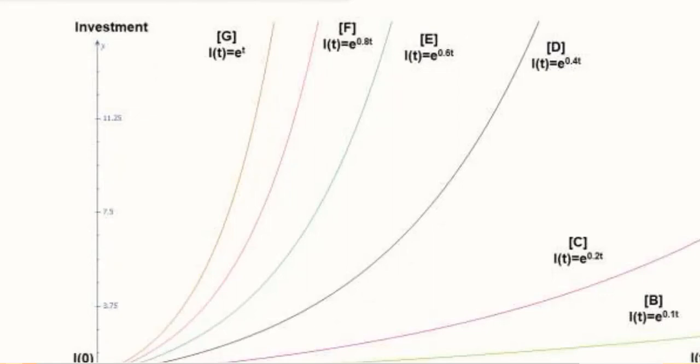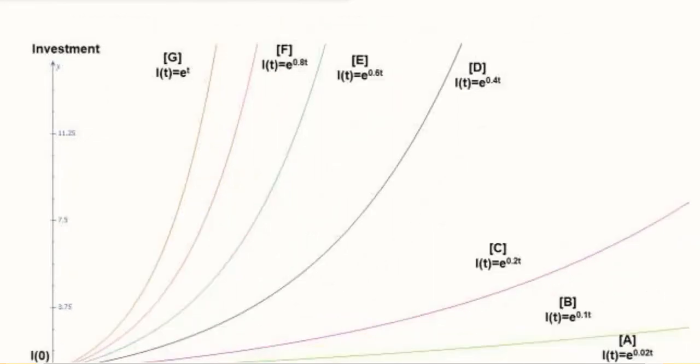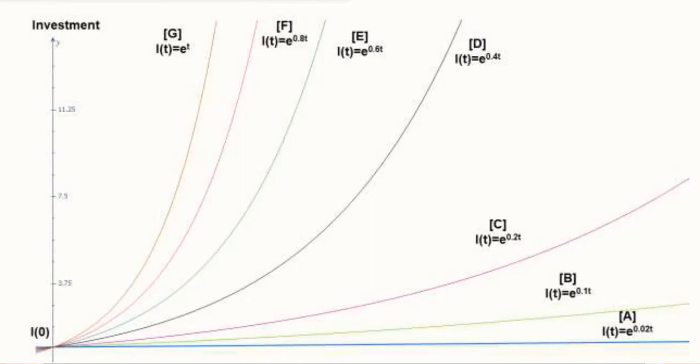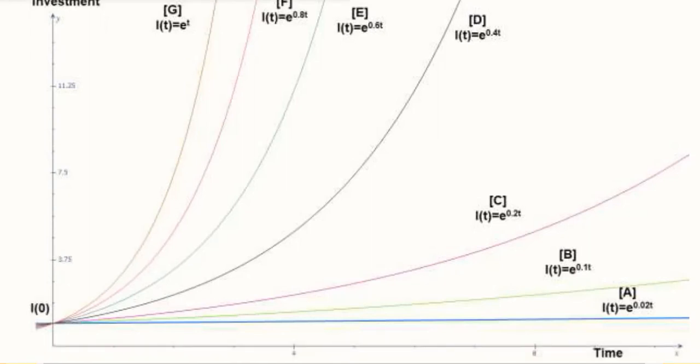This is the set of graphs and clearly you can see that there are seven graphs. On the x-axis we have plotted time because that is the independent variable. Investment is the dependent variable, so it appears on the y-axis. This is the value of I(0), the initial investment, that we assumed as 1 for this specific example. However, it can be any other positive value.